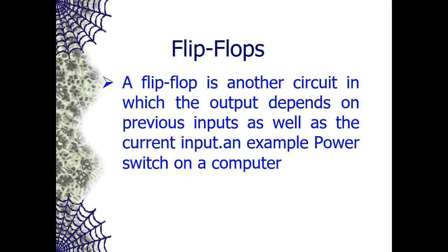A flip-flop is another circuit in which the output depends on the previous input as well as the current input. One form acts exactly like the power switch on a computer: the first time its input becomes one, the flip-flop turns the output on; the second time the input becomes one, the flip-flop turns the output off — like a push-button switch. A flip-flop does not respond to a continuous input; the input must return to zero before a value of one will cause the flip-flop to change state. Whenever the input transitions from one to zero, the flip-flop changes its output to the opposite state.